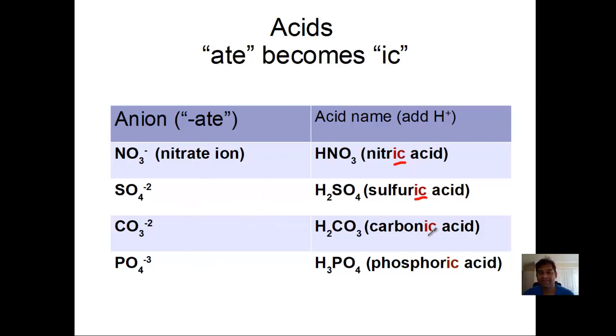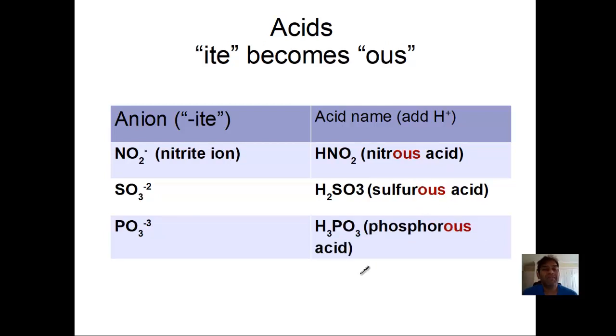The other type of anions that have less oxygens have -ite: nitrite, sulfite, and phosphite. What happens when this picks up an H+? Again, switching, this is HNO2, this becomes nitrous. The rule is -ite becomes -ous.